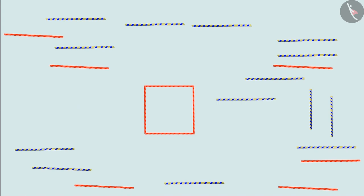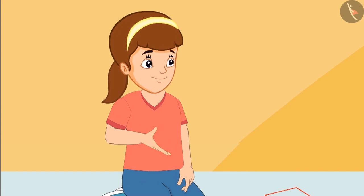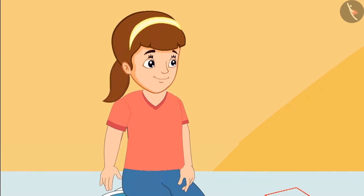Children, do you remember what we call this shape? Come, let us see. Neha, we call this shape a square. Chotu, this shape is also made of four straws. Why is it a square then?